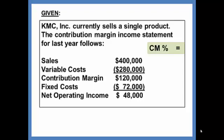The contribution margin ratio is the contribution margin of $120,000 divided by the sales of $400,000. That gives us a 30% contribution margin ratio.